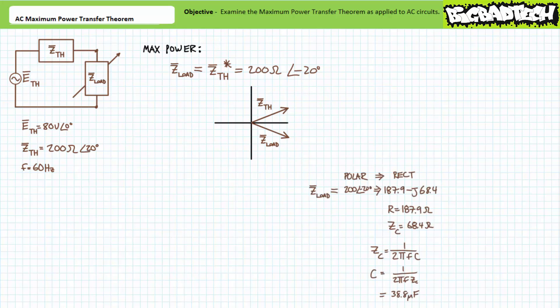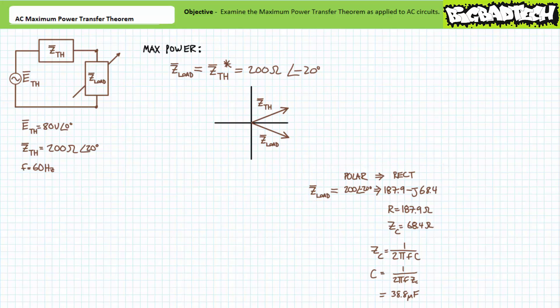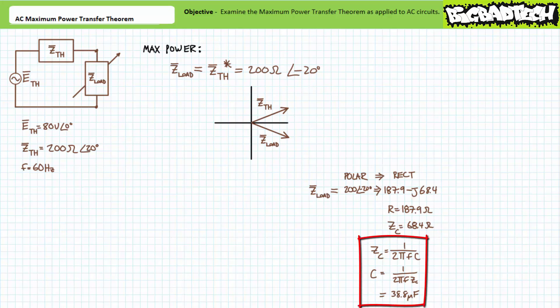Delving deeper into this analysis, the variable load impedance at 200 ohms at an angle of negative 20 degrees expressed using polar format has a value of 187.9 minus j68.4 when expressed using rectangular format. Given the negative imaginary reactive component, the variable load at maximum power conditions is most likely a 187.9-ohm resistor in series with a capacitor that presents an impedance magnitude of 68.4 ohms at the given excitation frequency of 60 hertz. An algebraic rearrangement of the capacitive complex impedance formula solving for capacitance suggests the capacitor has a value of 38.8 microfarads.